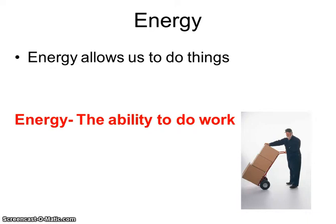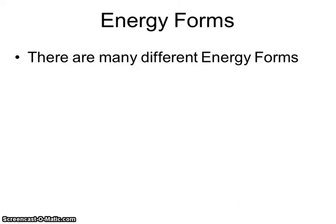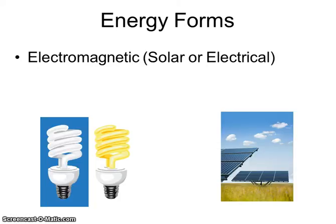We'll define what work is a little bit later, but if you were to look in a dictionary for the definition of energy, this is the definition you'd get: the ability to do work. There are different forms of energy, so let's take a look at these different forms. One form is electromagnetic — this is solar or electrical energy. This is what we're going to finish this semester with. We're going to take a look at the electromagnetic wave, which is light, and then finish up the year with electricity.